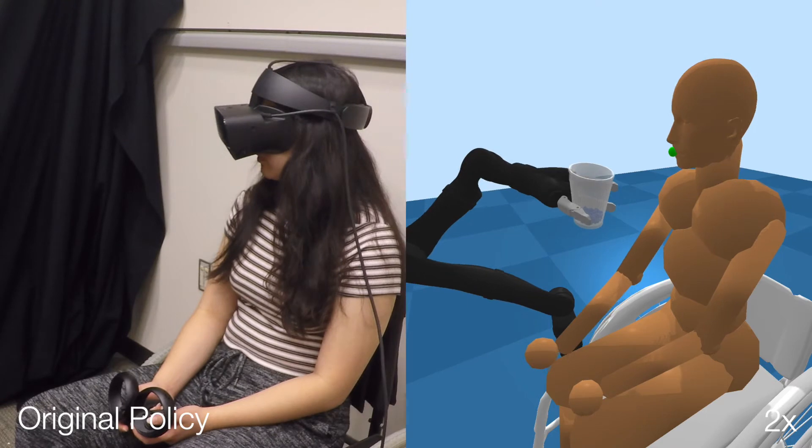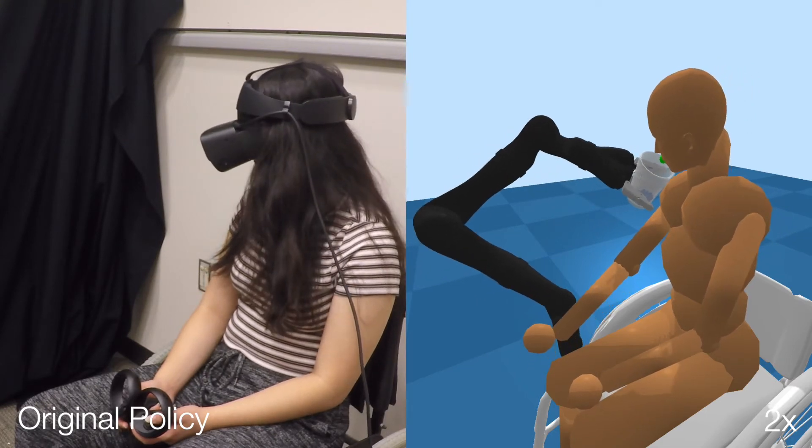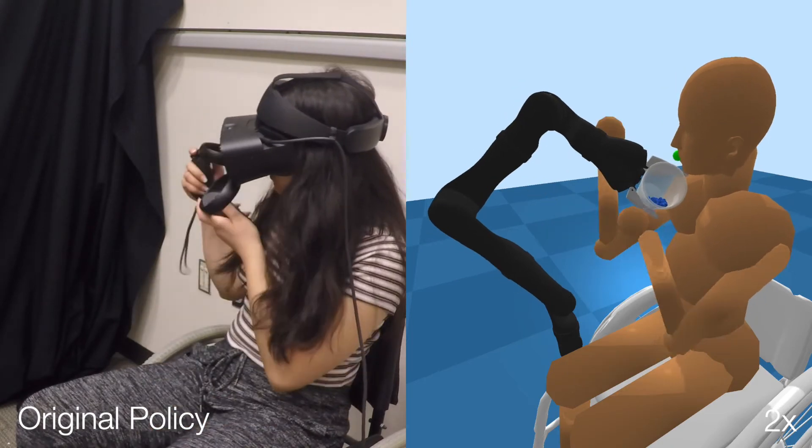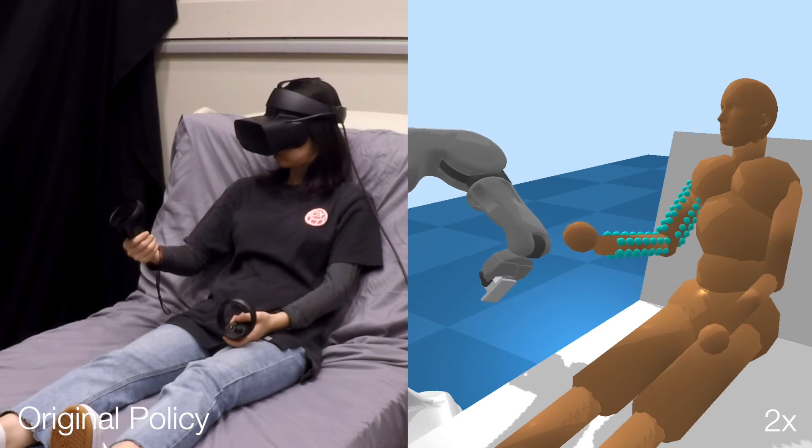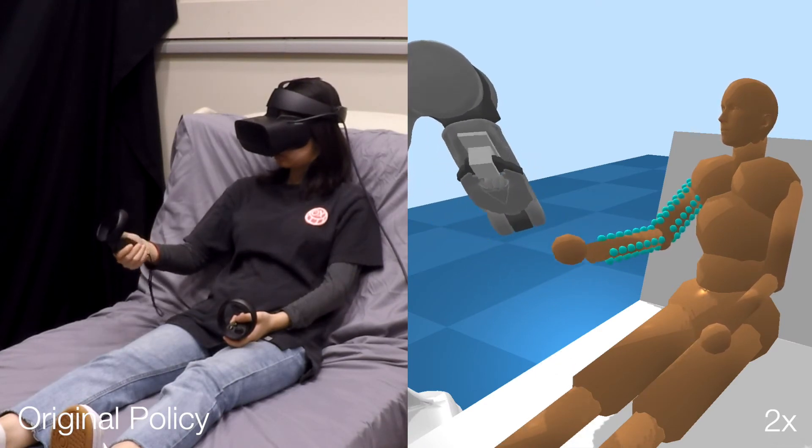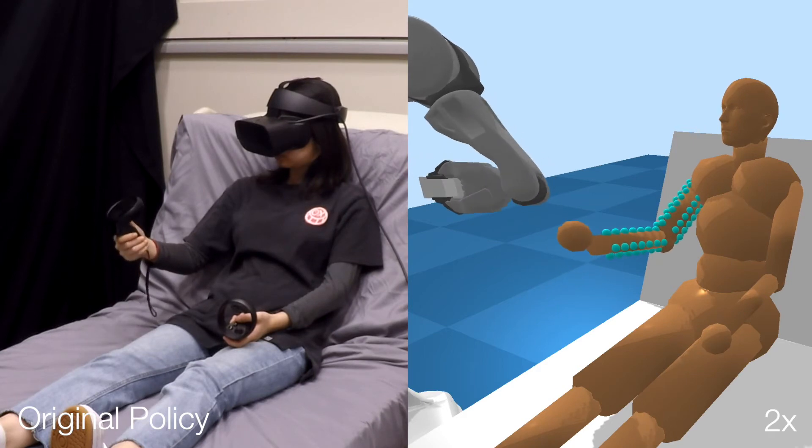We then tested our original and revised policies in a study with eight able-bodied participants. Across all participants, we observed that the original control policies for both robots consistently failed for several of the assistive tasks, exposing a difference in the distributions of human biomechanics between the original simulation environments and real people in VR.